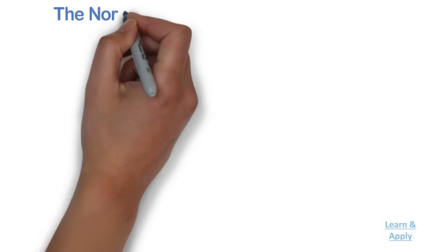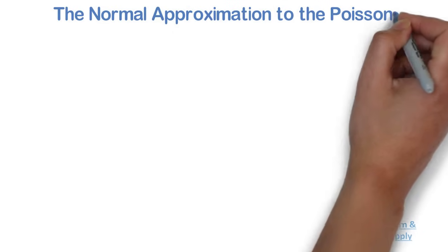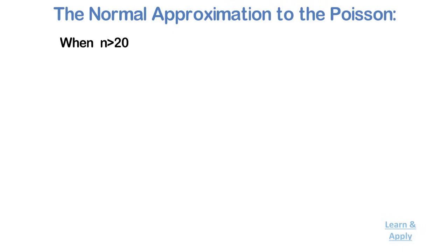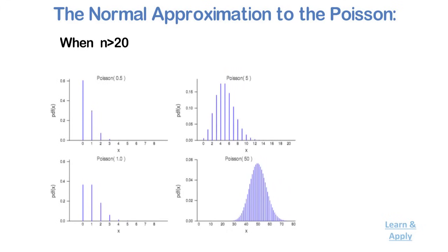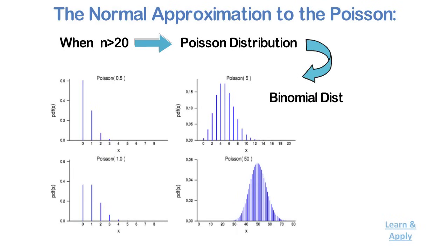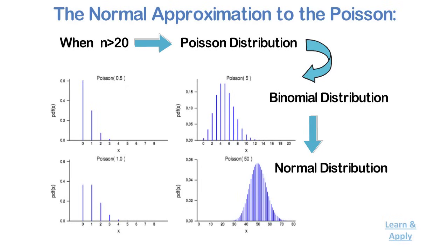The Normal Approximation to the Poisson: when n is greater than 20, or when the number of observations is very large, it has been statistically proven that the Poisson distribution becomes a very good approximation of the binomial distribution. And as seen earlier, the normal probability distribution is generally deemed a good approximation to the binomial when np and n(1−p) are both greater than 5.